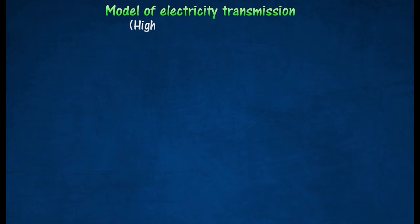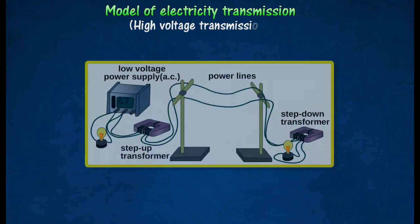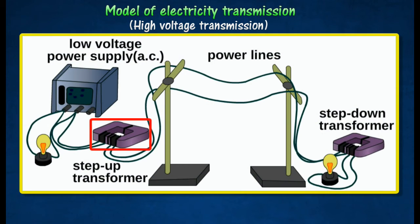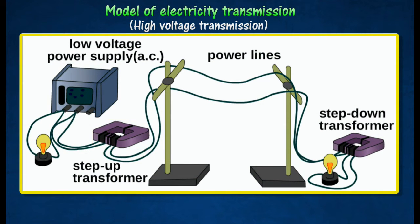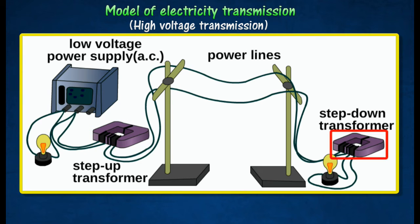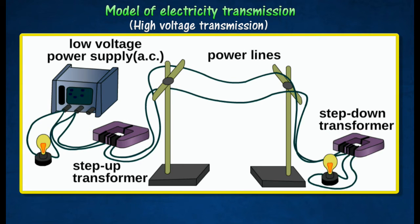To study the effect of high voltages during transmission, the voltage at the station is stepped up with a 1 to 20 step-up transformer. The step-down transformer with a ratio of 20 to 1 is placed at the consumer's end.